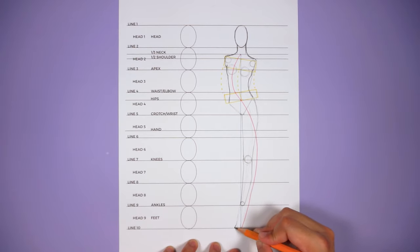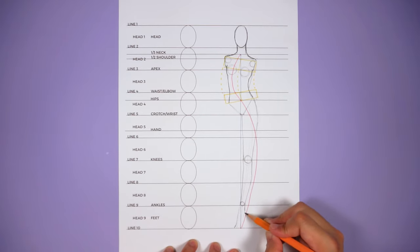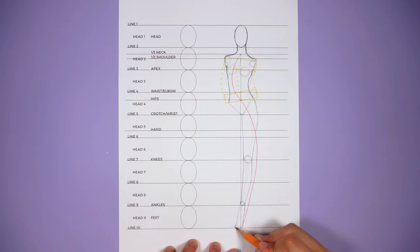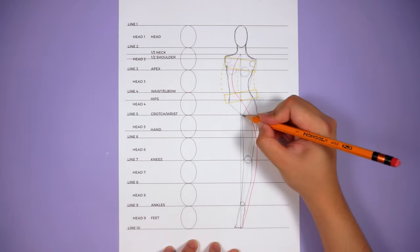And then see where the support leg is in relation to the balance line. Normally it is closer to the balance line than the other leg. And most of the time, I'm pretty sure all of the time, it is also straight.